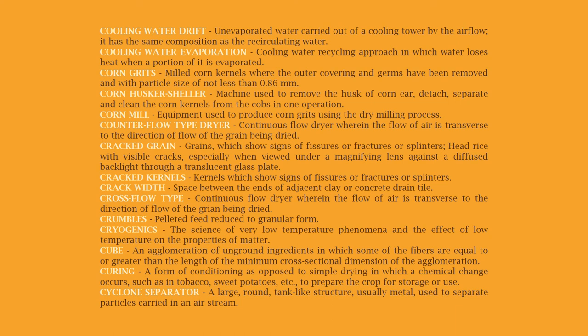Crack width: the space between the ends of adjacent clay or concrete drain tile. Cross flow type dryer: a continuous flow dryer wherein the flow of air is transverse to the direction of flow of the grain being dried. Crumbles: pelleted feed reduced to granular form. Cryogenics: the science of very low temperature phenomena and the effect of low temperature on the properties of matter. Cube: an agglomeration of unground ingredients in which some of the fibers are equal to or greater than the length of the minimum cross-sectional dimension of the agglomeration.